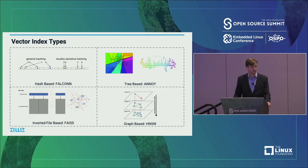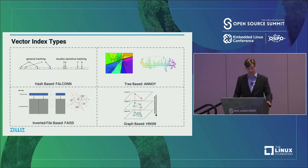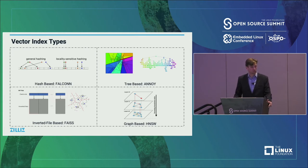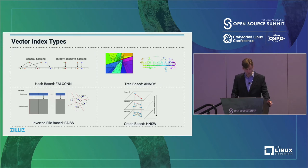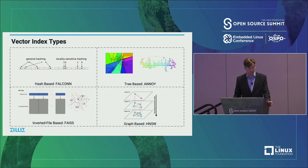The next type is inverted file-based, and this is the most popular type — this is where Facebook's Faiss library comes into play. It works through clustering: the key for every inverted file is the centroid of the stored data, and the data in that file is the raw vectors in that cluster. When searching, you compare your vector to the centroids, find the closest ones, then search through the data in that inverted file. This is great because it allows for expanding data — you can just create more inverted files.